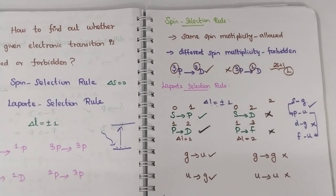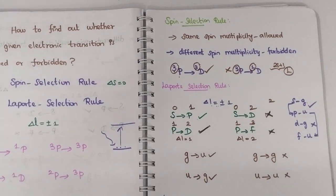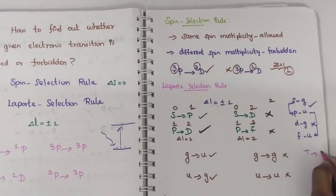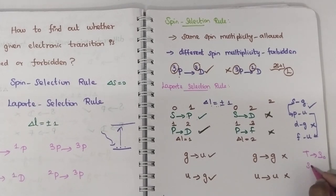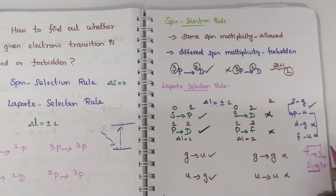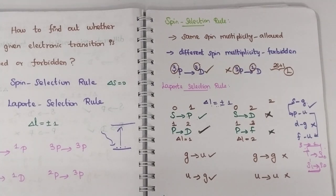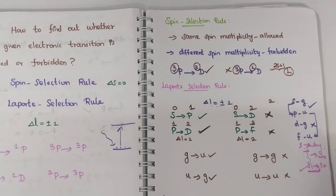In photochemistry, you would have studied the difference between fluorescence and phosphorescence. Phosphorescence is delayed fluorescence. Phosphorescence involves a triplet to singlet transition, which is a different spin multiplicity — a forbidden transition. That is why intersystem crossing (spin conversion) takes place, and the time duration for phosphorescence is very high. Fluorescence is a singlet to singlet transition, which is allowed.